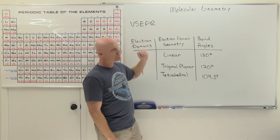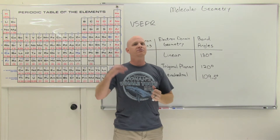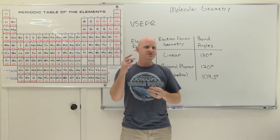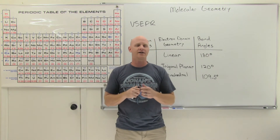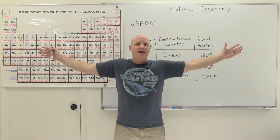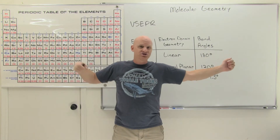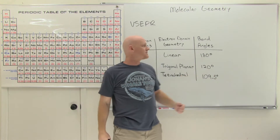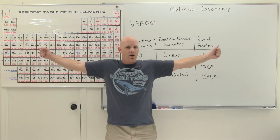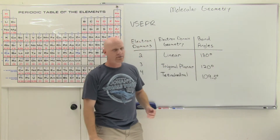If we want to spread electron domains as far apart as possible, we need to know three fundamental shapes. With two electron domains, the farthest apart you could spread them around the central atom is exactly 180 degrees. All three atoms — the central one and the two it's bonded to — would be aligned in a straight line. This shape is called linear, with bond angles of 180 degrees.